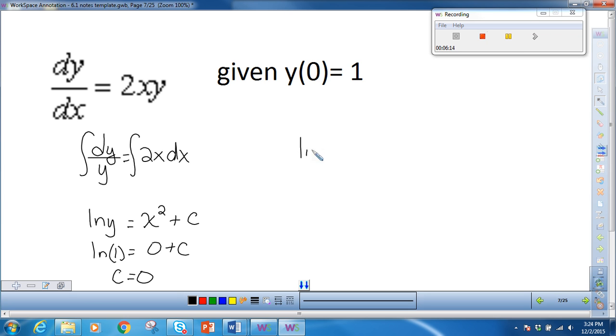So my equation is the natural log of y is equal to x squared. I need to solve for y, so I have to do e to the x squared is equal to y. And that's a particular solution because I solved for c.